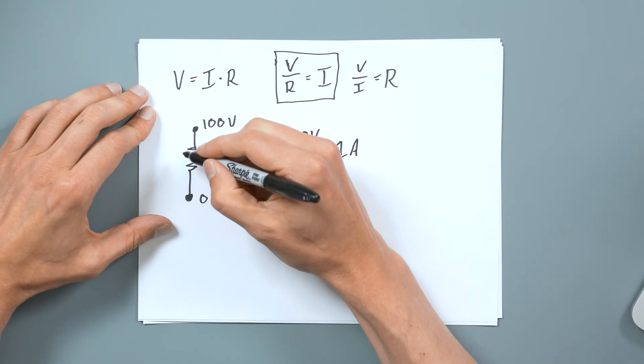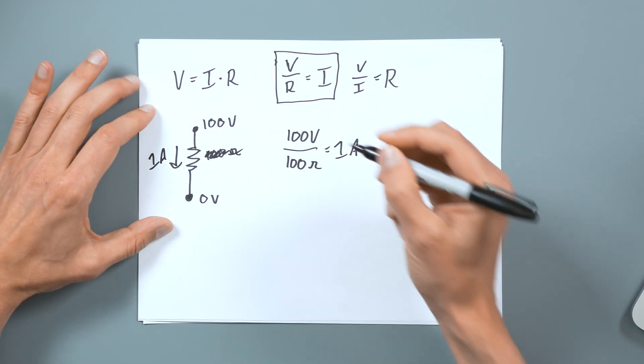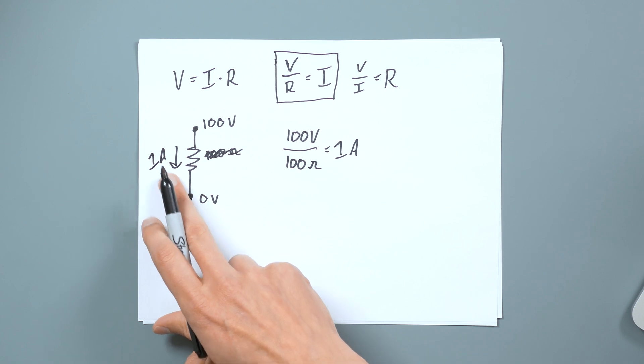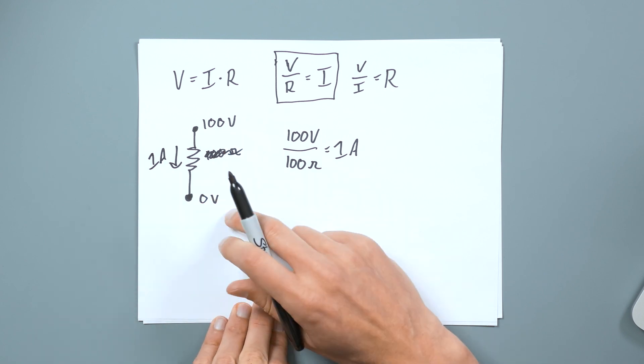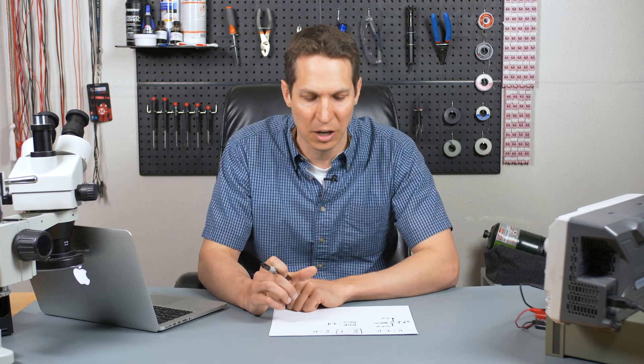Or if you happen to know what the current is, then you can do the same thing of saying, I know I have one amp through here, and there's 100 volts across it. So you can use any of these, you just need to have two, and then you'll figure out the other one.